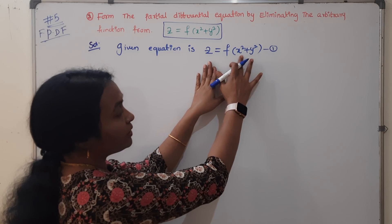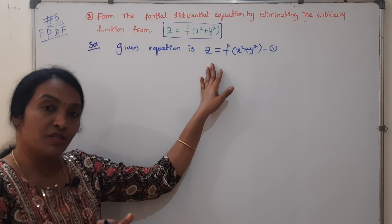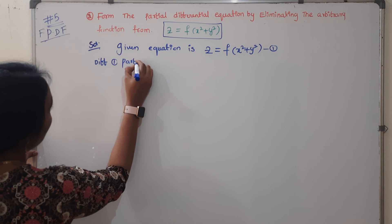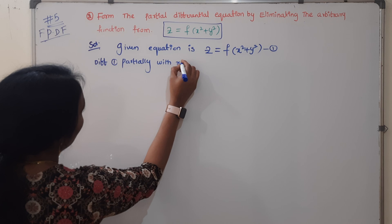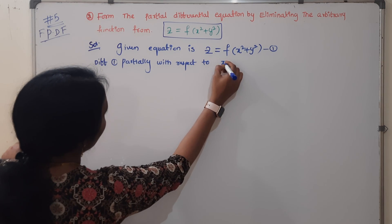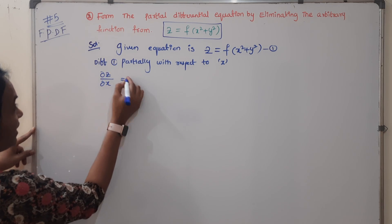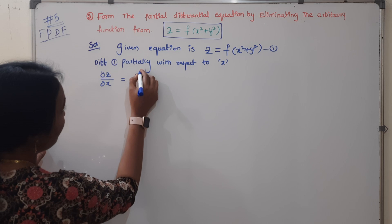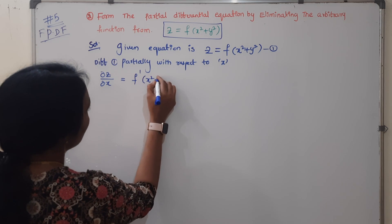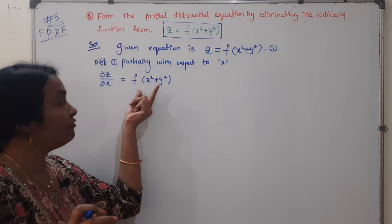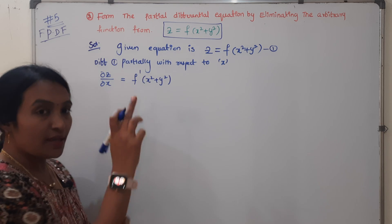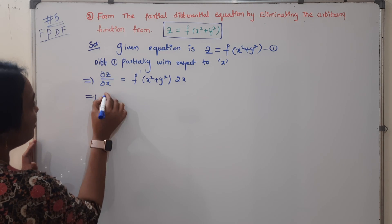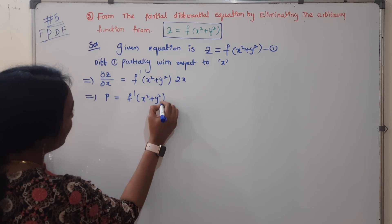Z is the dependent variable, x and y are the independent variables. Differentiate equation 1 partially with respect to x. dou Z by dou X equals p. f becomes f dash of (x² + y²), and x² differentiates to 2x. So p equals f dash(x² + y²) into 2x. This is equation 2.